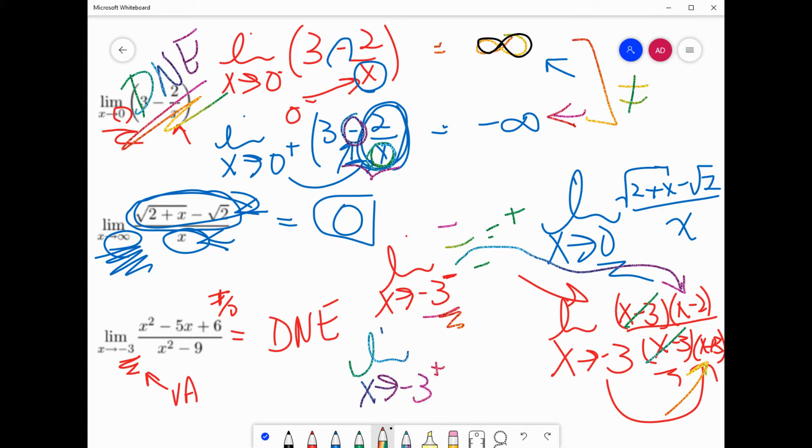Now, take it from the other direction. If I take negative three from the right-hand side, negative three from the right-hand side, yeah, that's going to give me a negative number in the numerator, but it's going to give me a positive number in the denominator. Well, negative over positive, of course, lo and behold, is negative. Well, since they don't match, yep, DNE.